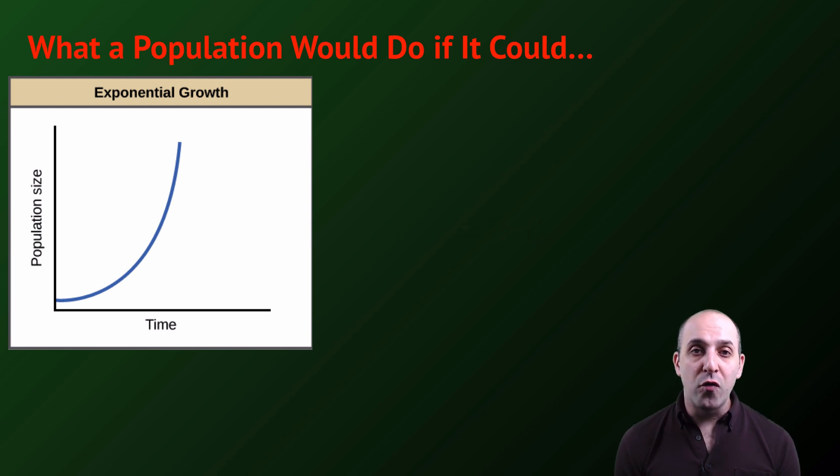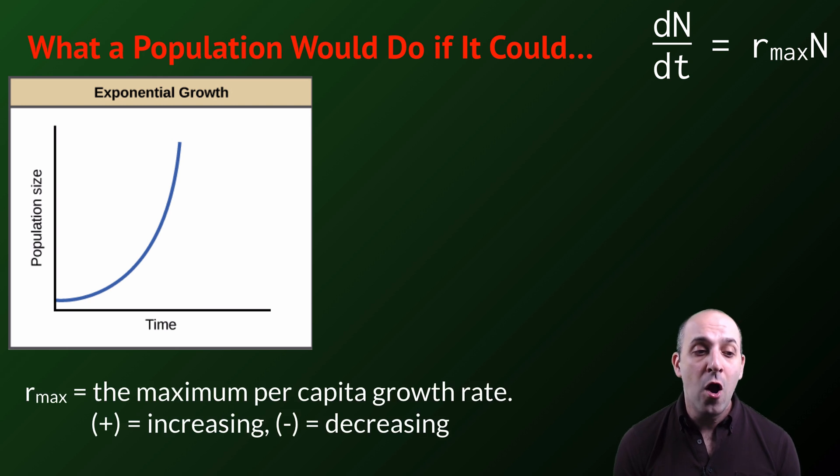That's exponential growth, and we can represent that by taking our prior population growth equation, dn over dt, and expressing it instead as r max times n, where r max is the maximum per capita growth rate. It's the maximum number of offspring that each member of the population could be contributing to the population in perfect condition. If the r max value is positive, the population will be in an exponential increase in growth. If it is negative, the population will be in an exponential decrease in growth. And if it is zero, the population would be neither increasing or decreasing.